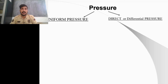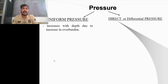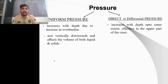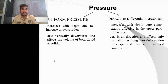Lithostatic pressure is uniform in all directions. Directed pressure is exerted from tectonic activity. Uniform pressure increases with depth, while directed pressure increases only up to a limit and is not directly dependent on depth. Uniform pressure acts vertically downward, affects both solids and liquids, and is assumed to act uniformly perpendicular to the rock. Directed pressure acts in all directions and only affects solids, resulting in deformation of shape and mineralogy.